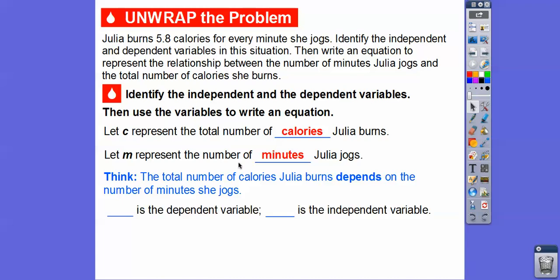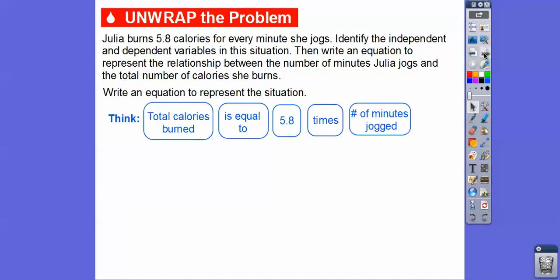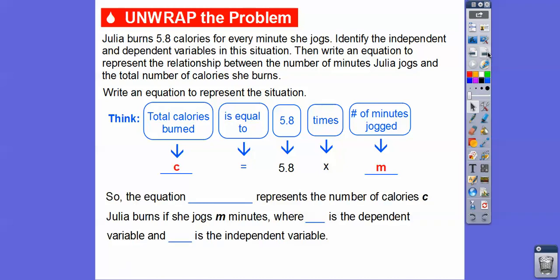c will represent the total number of calories Julia burns, and m represents the number of minutes she jogs. The total number of calories Julia burns depends on how long she jogs, so c is the dependent variable and m is the independent variable. The total calories burned equals 5.8 times the number of minutes — so the equation is c equals 5.8 times m, or just 5.8m. Here c is dependent and m is independent.